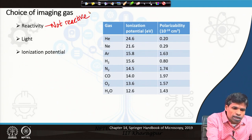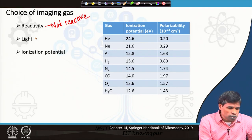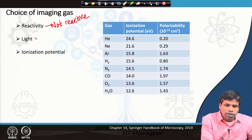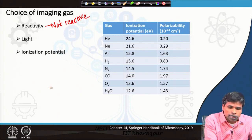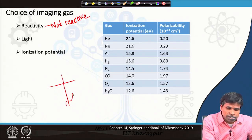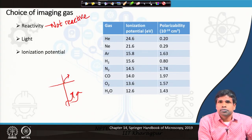Second, the gas should be as light as possible. If it is heavier, it will cause more damage to the sample. In addition, lighter gases can penetrate to a larger depth. When a light ion penetrates to a larger depth, because the recoil effect is less, the signal comes only from the surface rather than from depth. This makes it more suitable for microscopy.